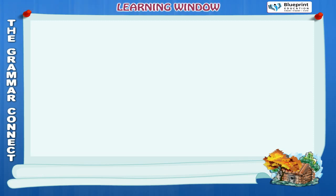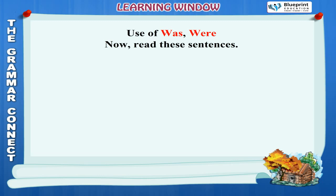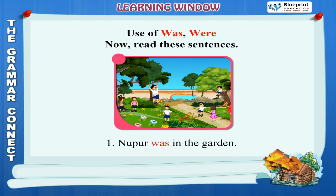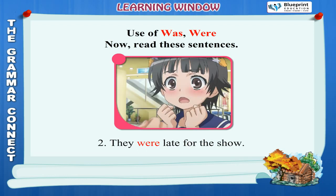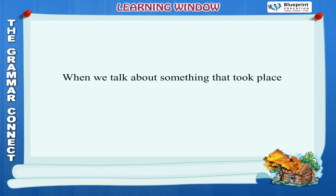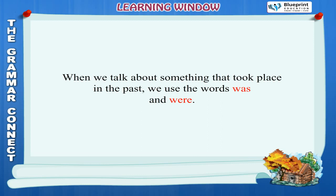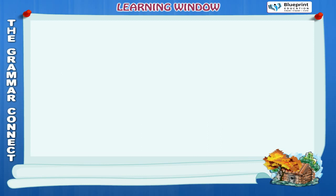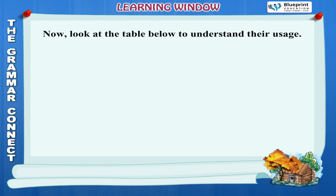Use of was and were. Read these sentences: 1. Nupur was in the garden. 2. They were late for the show. When we talk about something that took place in the past, we use the words was and were. Now look at the table below to understand their usage.